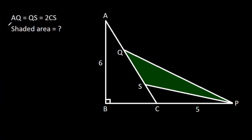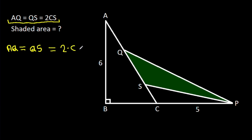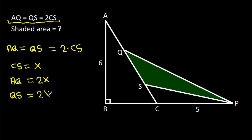We have AQ = QS = 2 times CS. We need to find the shaded area. If CS is X, then AQ will be 2X and QS will be 2X.